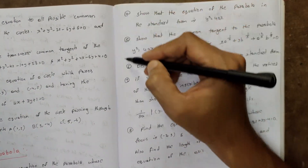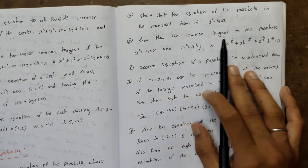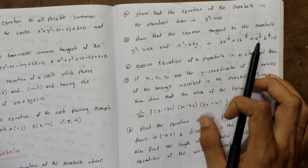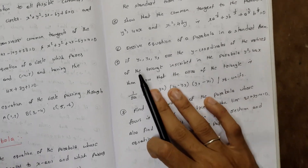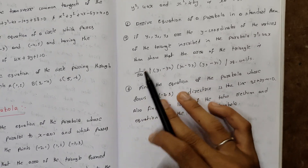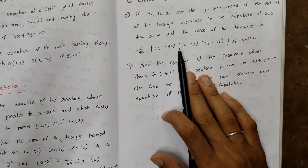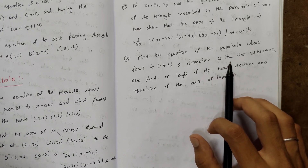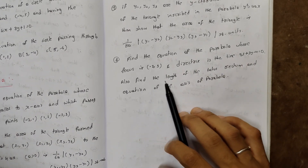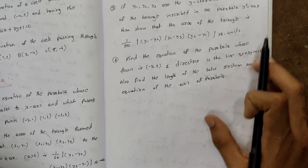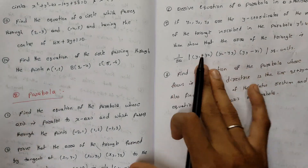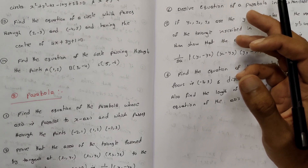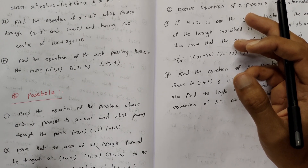Show that the equation of the common tangent to x²+y²=2a² and y²=8ax is y=±(x+2a). Show that the equation of the parabola in standard form is y²=4ax — this is a very important derivation question. Show that the common tangent to y²=4ax and x²=4by is x·a^(1/3)+y·b^(1/3)+a^(2/3)·b^(2/3)=0. Find the equation of the parabola whose focus is (-2,3) and directrix is 2x+3y-4=0; also find the length of the latus rectum and axis equation.